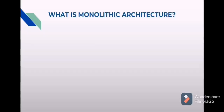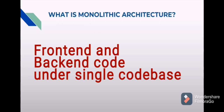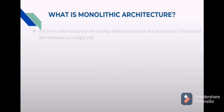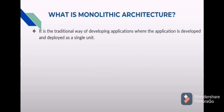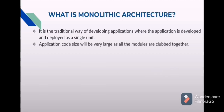What is monolithic architecture? Traditionally, if you want to build some application, we will create one application code and under that we will put all our modules together — both front end and back end everything will be under single code base. This is called monolithic architecture. It is the traditional way of developing an application where the application is developed and deployed as a single unit, and so our application code size will be very large as all the modules are clubbed together.